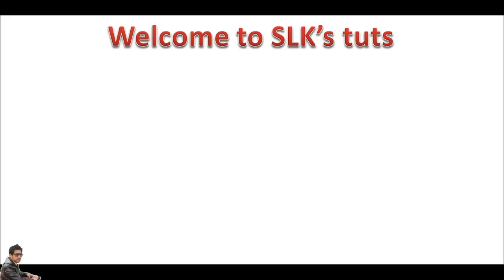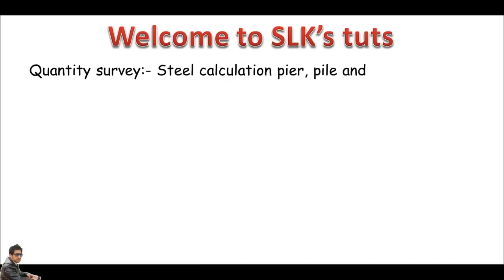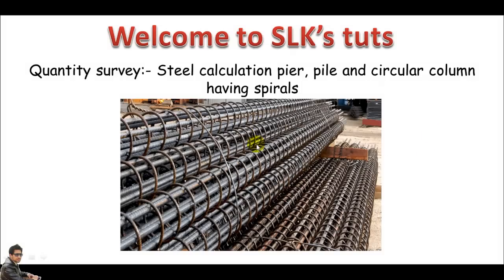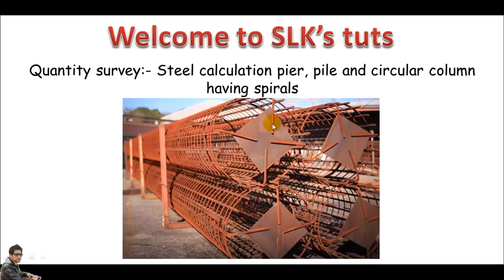Assalamu alaikum, welcome back to SLK Tools. In this section we'll be talking about steel calculations for pier pile and a circular column when they have spiral ties. In the previous lecture we covered circular ties, and here we are working with spirals, just like a spring. Look at this picture — you can clearly see the combination of spirals with the main bars. These spring-type reinforcements are called spirals. Let's go through a few examples to understand them better.